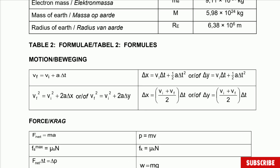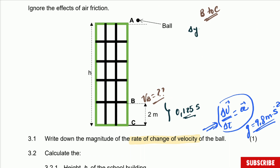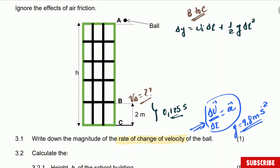According to what we have and looking at the formulas, we can use the displacement formula because we have the displacement which is 2 meters, the initial velocity which we are looking for, the time, and we have everything. So this is the most suitable formula to use. The formula is: displacement equals initial velocity multiplied by time plus half acceleration multiplied by time squared. Substituting: 2 equals initial velocity multiplied by 0.125 plus half times 9.8 times 0.125 squared.